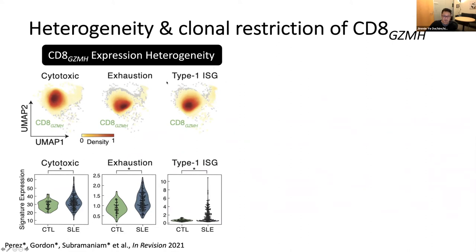Looking more closely at these Granzyme H CD8s, they are a heterogeneous population expressing three critical gene signatures. First, a type 1 interferon-stimulated gene response — usually seen in acute viral responses and a known signature of lupus. Second, some cells are cytotoxic, secreting granzymes and other molecules known to kill target cells. Third, some cells are exhausted — activated for a long time and no longer functional. What's really interesting and only revealed by single cell sequencing is that very different sets of cells express cytotoxicity, exhaustion, and type 1 ISGs — they are not the same cells.